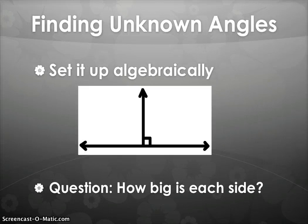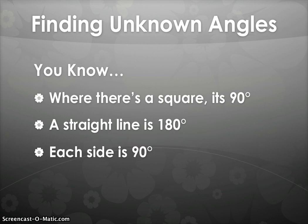For the next one now, you want to ask yourself how big each side is. Before we get ahead of ourselves, look at the hint. What do we have right here? A square in the corner. That should send some light bulbs flashing off in people's heads. You know where this square is? It's 90 degrees. And you know that a straight line is 180 degrees. So that would mean that each side is 90 degrees. Really simple.